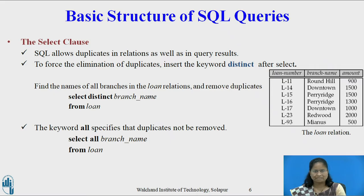SQL allows duplicates in relations as well as in query results. To force the elimination of duplicates, insert the keyword DISTINCT after SELECT. Example: find the name of all branches in the loan relation and remove duplicates — SELECT DISTINCT BRANCH_NAME FROM LOAN. The keyword ALL specifies that duplicates are not removed: SELECT ALL BRANCH_NAME FROM LOAN. Since duplicate retention is the default, we will not use ALL.